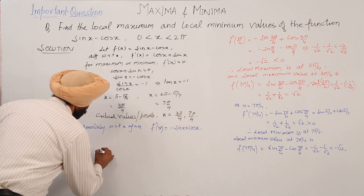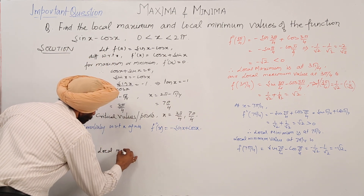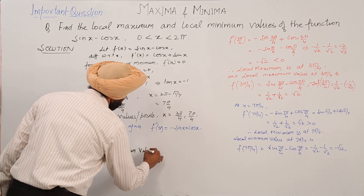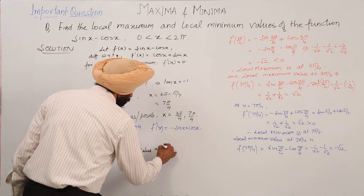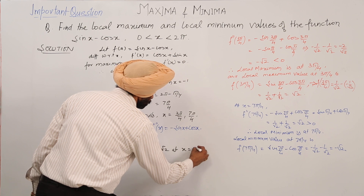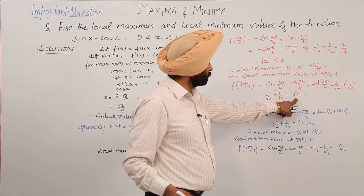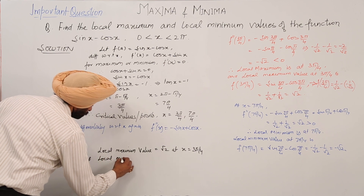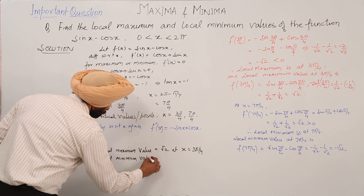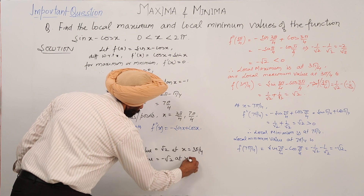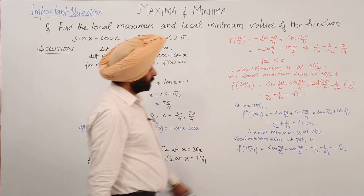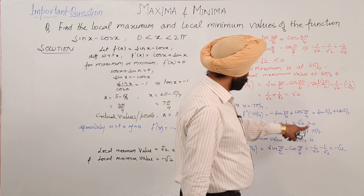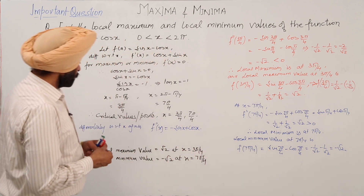Final answers: the local maximum value is √2 at x = 3π/4, and the local minimum value is minus √2 at x = 7π/4.